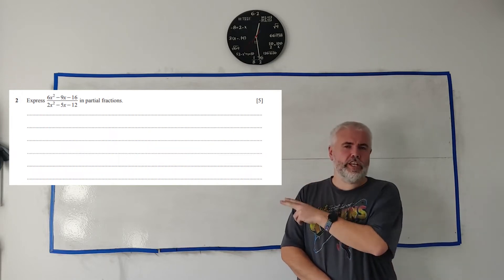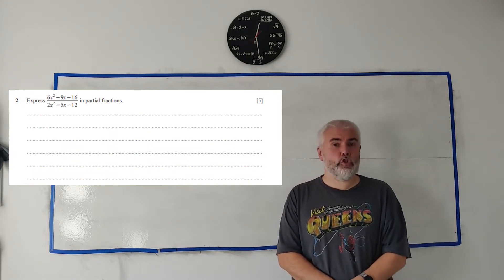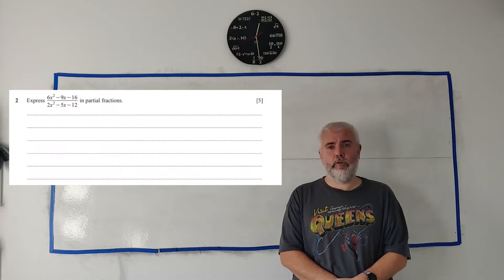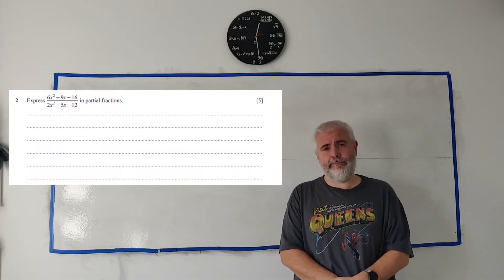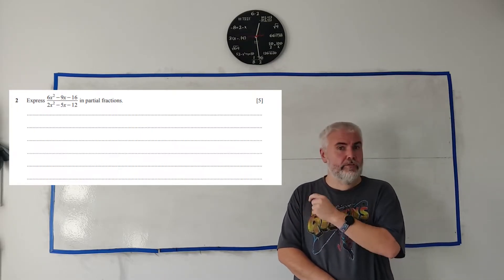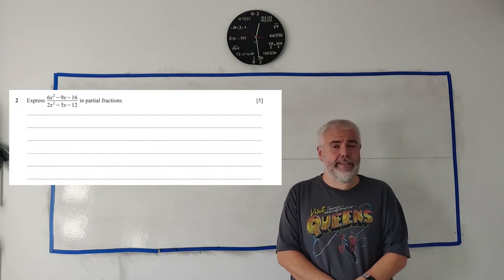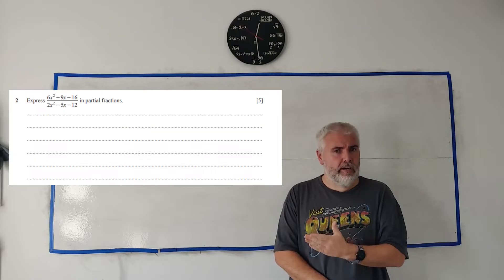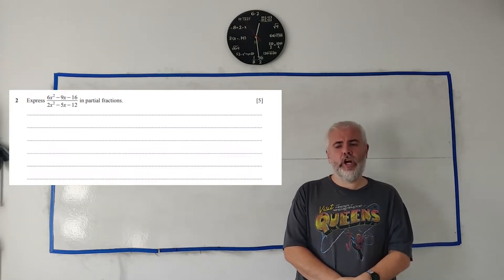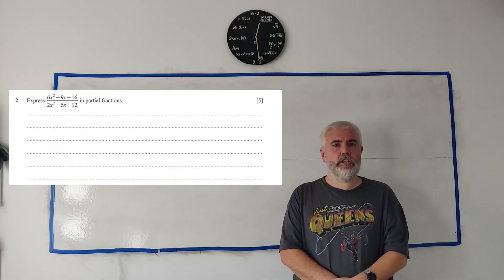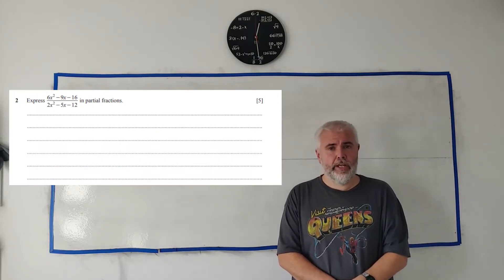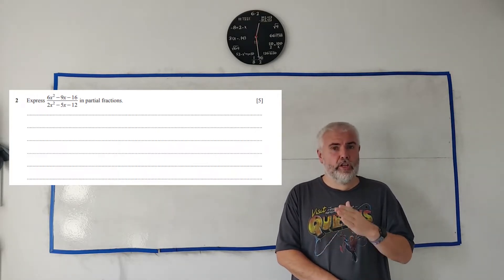In this video, I'll be working through the question you see on the screen from paper 3.2 from 2024 of the Cambridge A-Level exam. If you're looking for a different question from this paper, check out the description below for a link to a playlist. And if you're looking for a different paper entirely, have a look around on my channel. I'll be doing all this on a whiteboard, hopefully just like you're used to your teacher doing. But remember, we're not in a classroom, we're on YouTube.